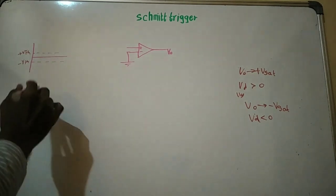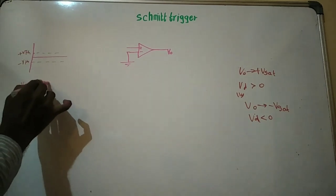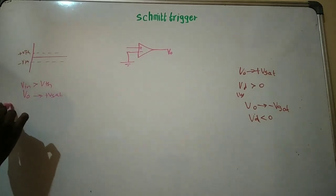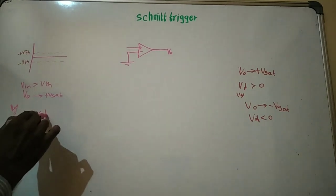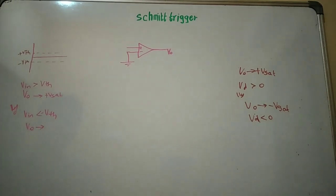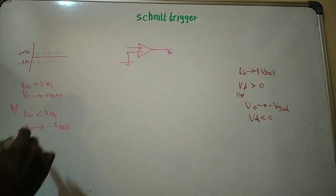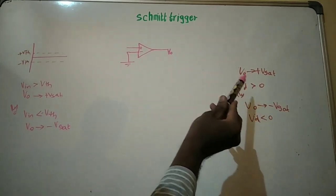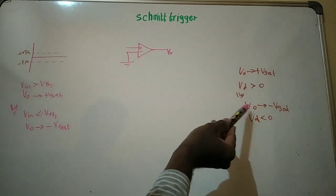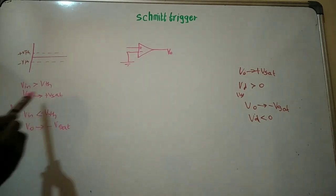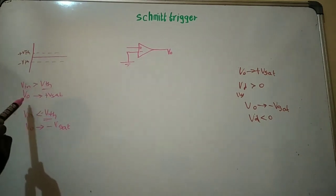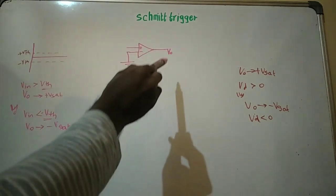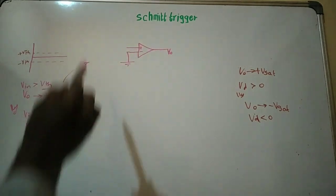For a Schmitt Trigger, if Vin is greater than Vth, then we need to drive the output voltage to plus Vsat. Similarly, if Vin is lesser than minus Vth, then we have to drive the output voltage to minus Vsat. Here you have only one boundary line — the zero potential. If Vd is greater than zero, Vout is plus Vsat; if Vd is lesser than zero, Vout is minus Vsat. But in Schmitt Trigger you have two different boundary levels — Vth and minus Vth. Somehow we need to build this feature into the op-amp circuit to build a Schmitt Trigger.